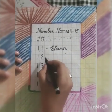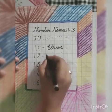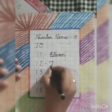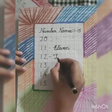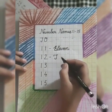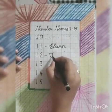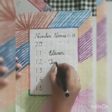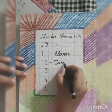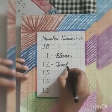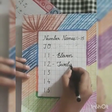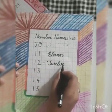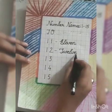Now we will write 12. First of all, we will make capital cursive letter T like this. Now we will join W with it. T-W-E-L-V-E. 12. T-W-E-L-V-E. 12. Once again, T-W-E-L-V-E. 12.